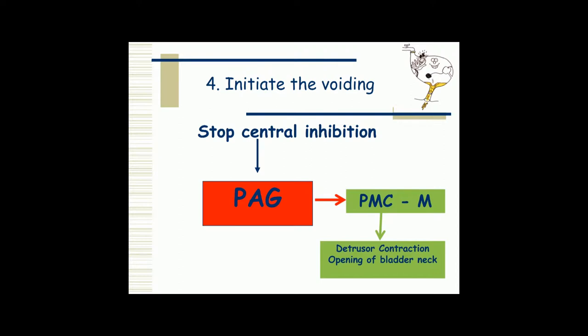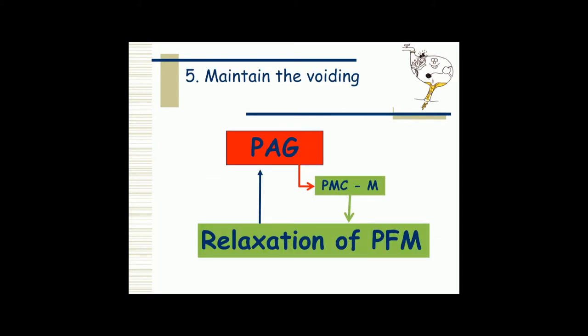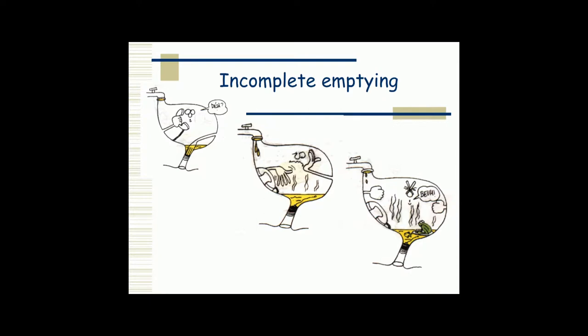Moving to the emptying phase: to initiate voiding, we need to stop the central inhibition. The periaqueductal grey will then allow the medial part of the pontine micturition centre to open the bladder neck and generate a detrusor contraction to empty the bladder. To maintain voiding and complete emptying, we need a relaxation of pelvic floor muscles, because any contraction — whether voluntary or automatic — will trigger the sacral reflex, interrupting voiding and leading to incomplete emptying of the bladder, which can lead to recurrent urinary tract infections.